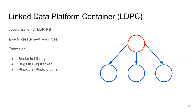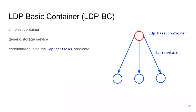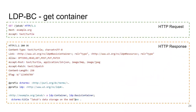To store something according to the Linked Data Platform we need a container — something that can contain items. Examples of containers are books in a library, bugs in a bug tracker, photos in a photo album. A container is an RDF resource of a specific type — in this case an ldp:BasicContainer — and using the ldp:contains predicate it points to all the items it contains. Those triples with the contains predicate are called containment triples.